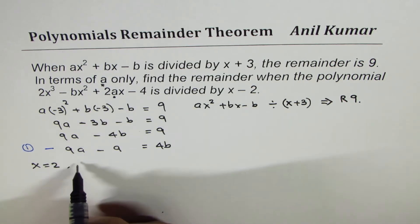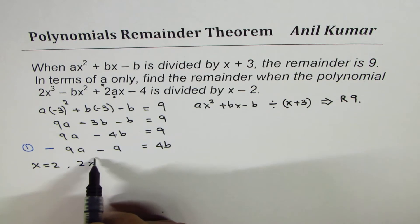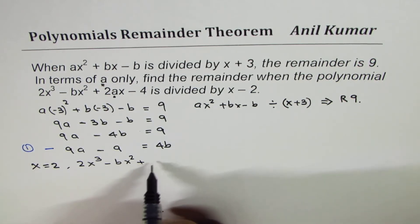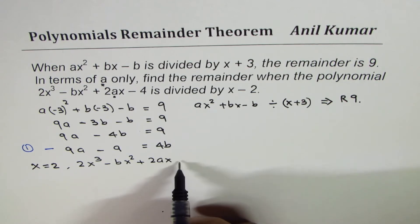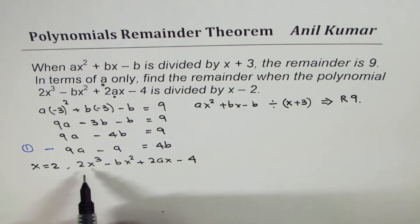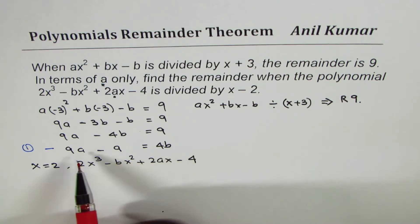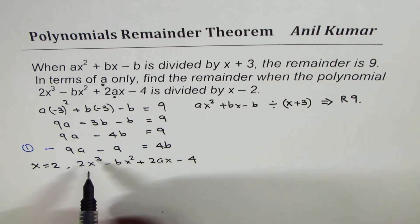So we are given the polynomial 2x cube minus bx square plus 2ax minus 4. Now in this polynomial we are going to do two substitutions. One x equals to 2 and the other one 4b equals to 9a minus 9. That is what we are going to do. So let's do these substitutions.